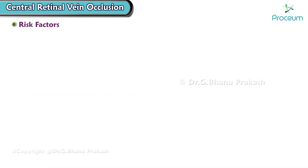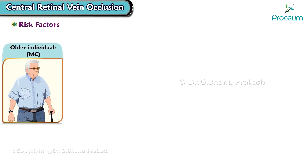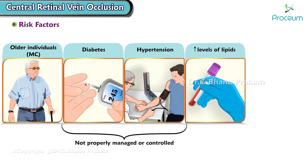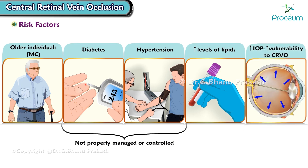Next, let's go over the risk factors. There are several risk factors associated with central retinal vein occlusion. It is more commonly observed in older individuals. Chronic conditions like diabetes and hypertension, if not properly managed or controlled, can significantly elevate the risk. Elevated levels of lipids in the blood can also contribute. Additionally, elevated intraocular pressure can increase vulnerability to central retinal vein occlusion.